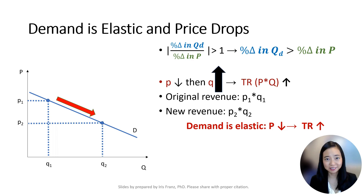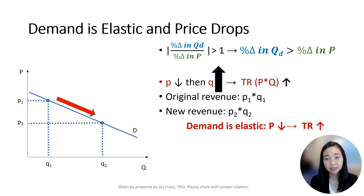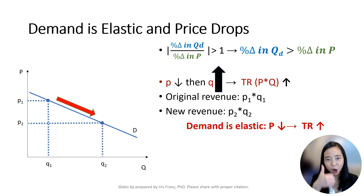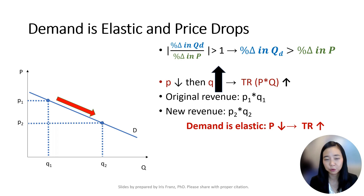We will start with elastic demand. We know that when demand is elastic, the percentage change in quantity demanded is greater than the percentage change in price. Therefore, when price drops, quantity demanded will go way up. I want you to draw a downward pointing arrow to indicate that the price drops, then draw a very large and thick arrow pointing upwards for quantity demanded. Your total revenue will be dominated by the larger arrow pointing up, so your total revenue will go up.